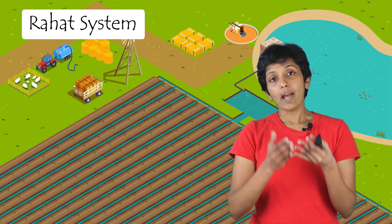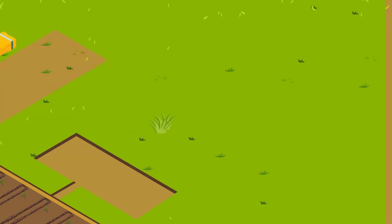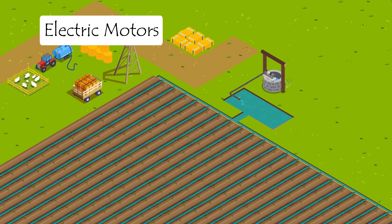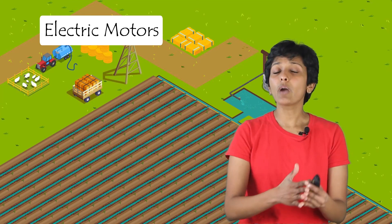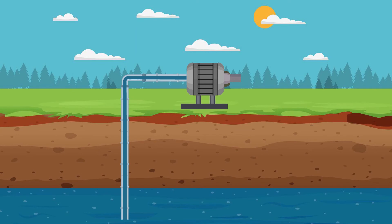In the systems we have seen so far, we have either used human or animal labor to draw water. With the advent of electricity, electrical motors started doing this job. The different water sources were then connected to an electrical motor, and when it ran, it pulled water from any of these sources and dumped it into the network of channels. One big advantage is that you don't need a huge well anymore — this can work quite well with just a tube well. A tube well is simply a large pipe inserted deep into the ground so one end reaches the groundwater, and the other end is connected to the motor which pulls the water out.